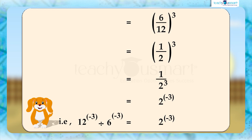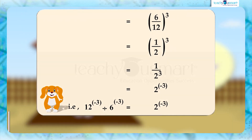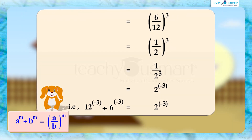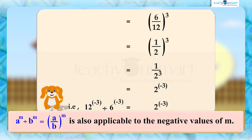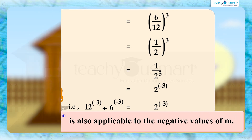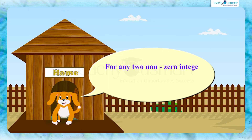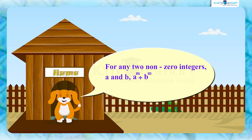Here we can see the exponents are the same, and we get the base 2 by dividing the bases 12 and 6. That is, a raised to m divided by b raised to m equals (a/b) the whole raised to m is also applicable to negative values of m. So we can say that for any two non-zero integers a and b, a^m divided by b^m equals (a/b) the whole raised to m, where m is an integer.